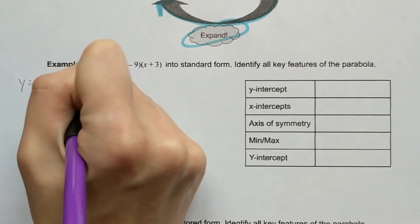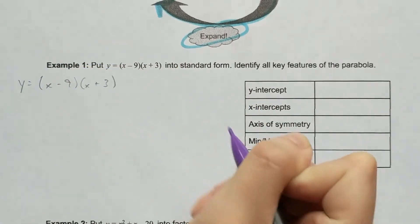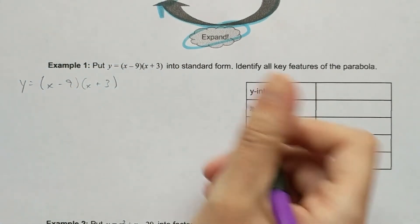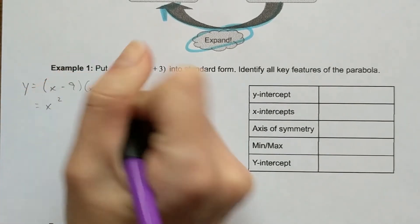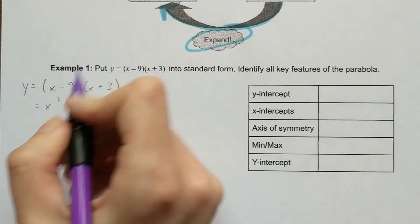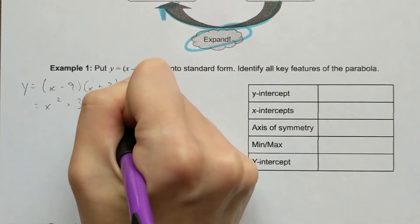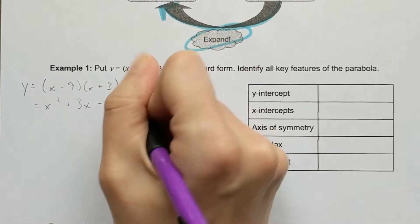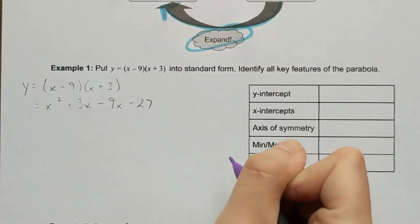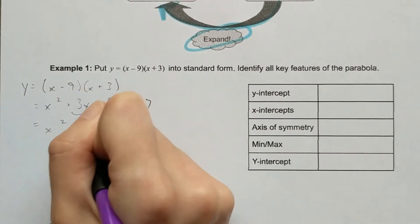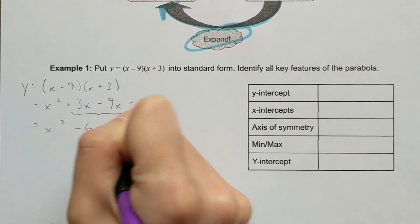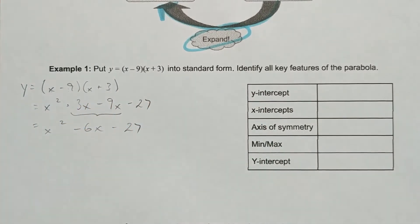I need to expand here, so I'm going to go ahead and do that. I'll rewrite: (x - 9)(x + 3). Expanding: x times x is x², x times 3 is 3x, negative 9 times x is -9x, negative 9 times 3 is -27. Combining like terms in the middle gives me x² - 6x - 27.